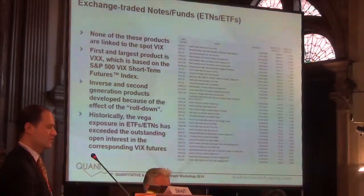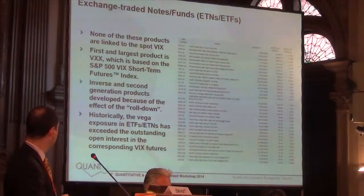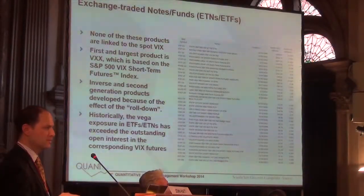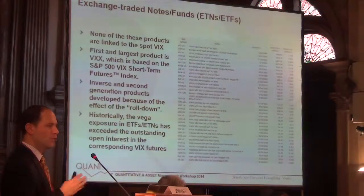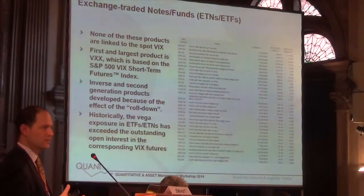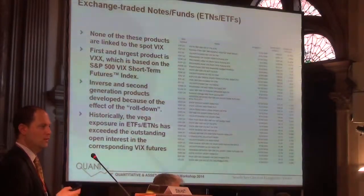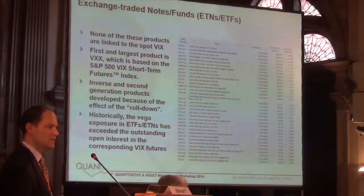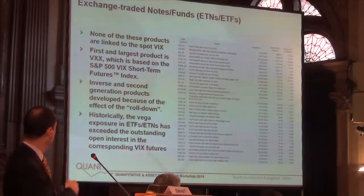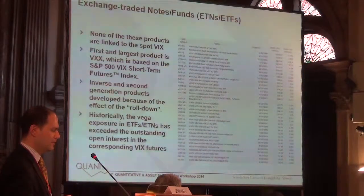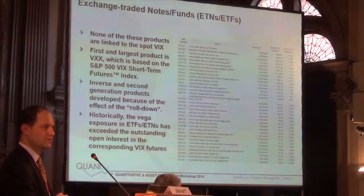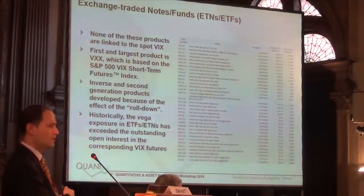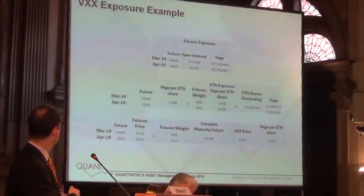This slide shows the exchange-traded notes that are out there, including the VSXX ones. None of these products are linked to spot VIX — they all gain exposure to VIX through some combination of VIX futures or VIX options. Most roll before reaching settlement, so they don't have the cash settlement issue, but they do have decay associated with what people call the rolldown — the decay of the VXX price associated with the cost of maintaining a long futures position. Historically, especially around 2010-2011, if you added up the vega exposure of these funds and compared it to the open interest of VIX futures, the exposure from these funds actually exceeded the vega exposure of the VIX futures open interest.